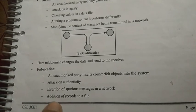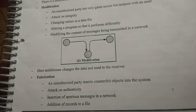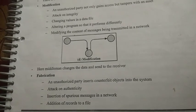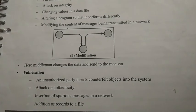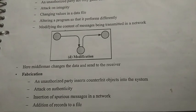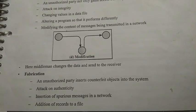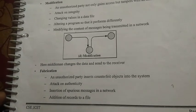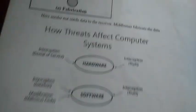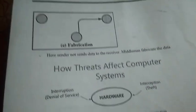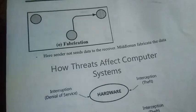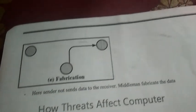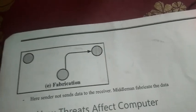The fourth type of Threat is Fabrication — the addition of counterfeit records to a file. Fabrication involves inserting false records or data into a system.